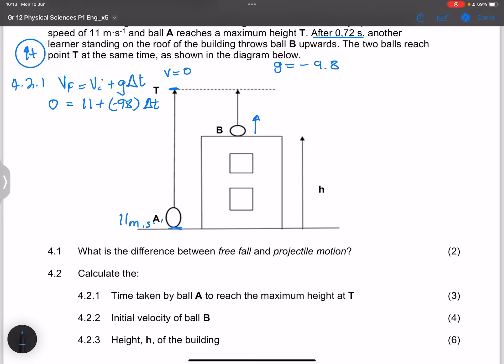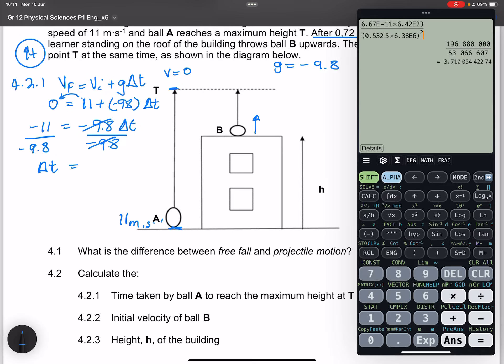I'm going to say our initial velocity is positive 11 plus negative 9.8, that's gravitational acceleration, and we're looking for time. So I'll take this to the other side. So I've got negative 11, which is equal to negative 9.8 delta T. And now we can divide by negative 9.8. This is a nice way to actually check if there are no mistakes. If you ever get time as a negative, then it tells you that something is amiss.